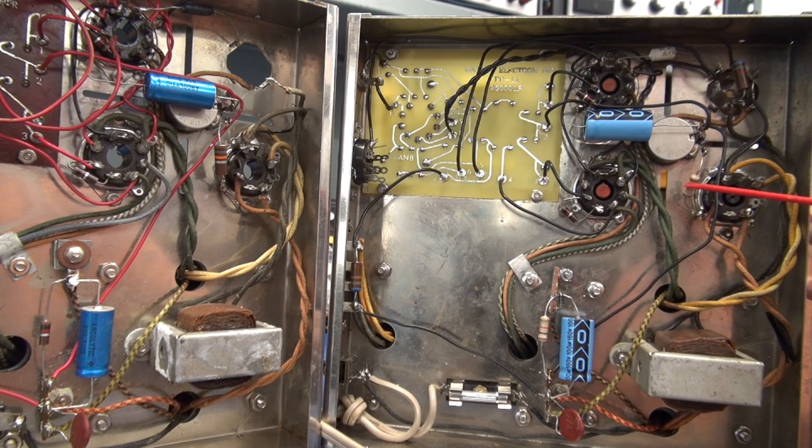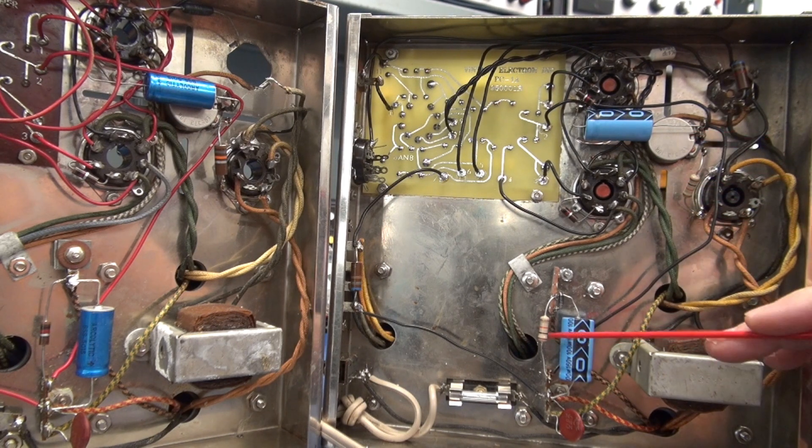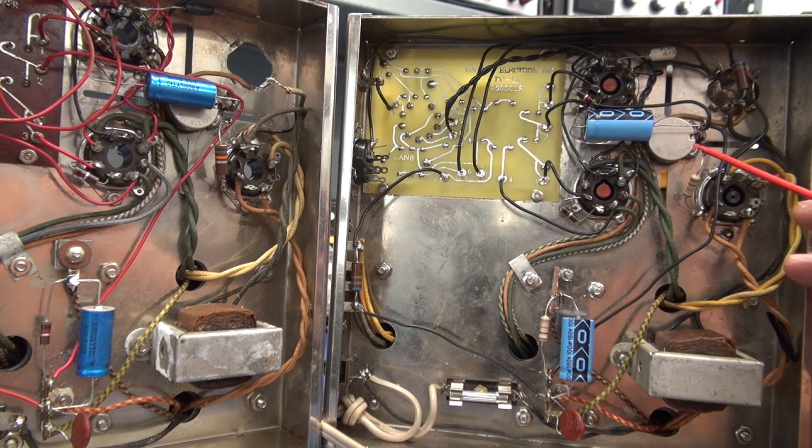now you also have another 10K going to ground off of that pot. So, you've got 10K here, a 10K pot, 10K here. This configuration allows for proper bias adjustment of your output tubes.